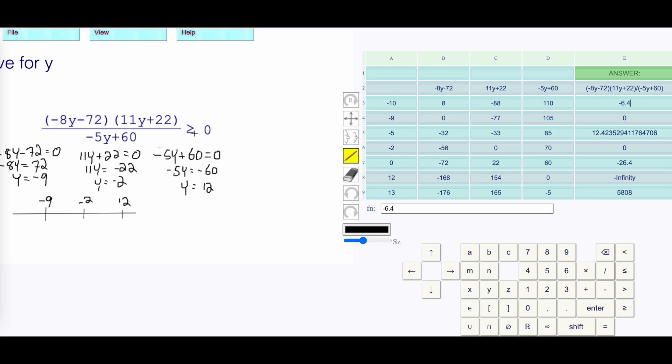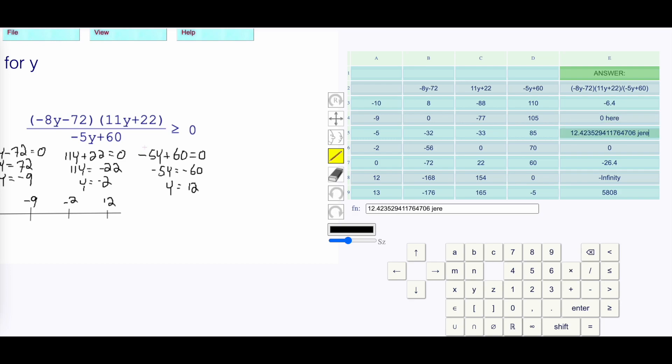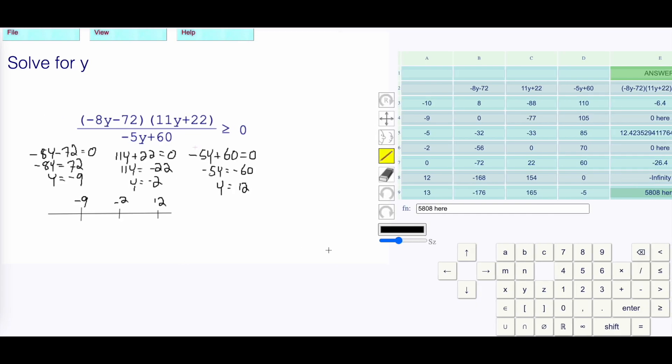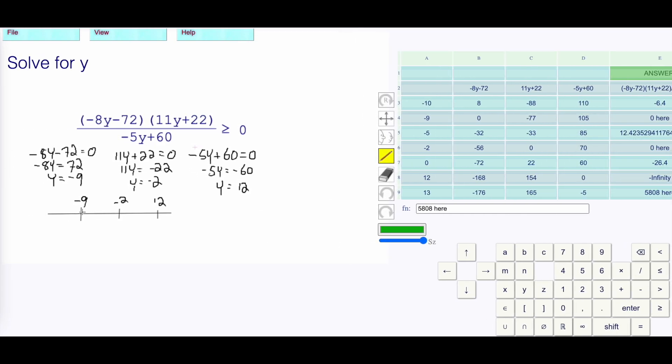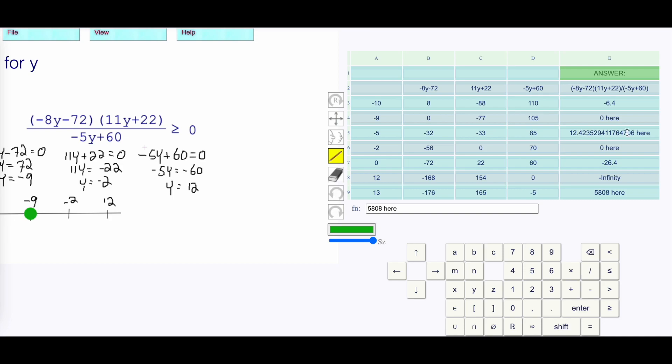When is it greater than or equal to 0? When is it positive or 0? That's here, here, here, and here. And if I mark that on our number line over here, on -9, so I'm putting a solid dot on -9. -9 is included. -2 is included, and in between is included. I'm going to put a solid dot on the -2, and then everything in between.